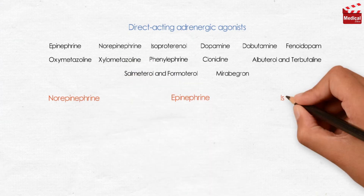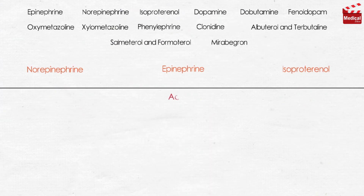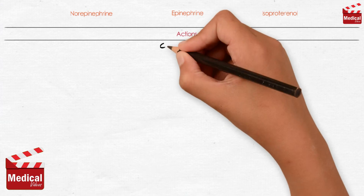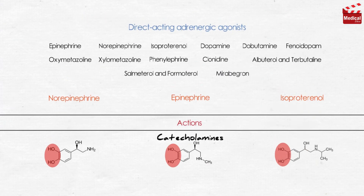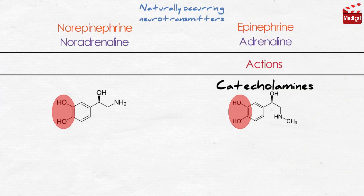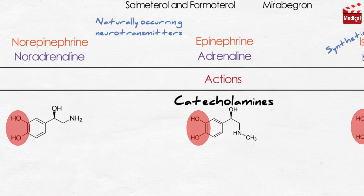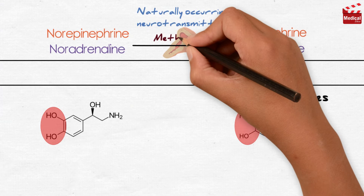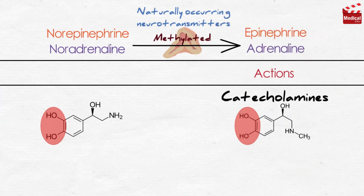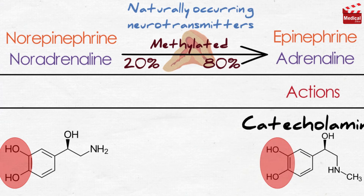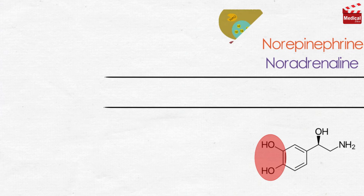Let's talk about epinephrine, norepinephrine, and isoproterenol at the same time and make a simplified comparison of their actions, therapeutic uses, pharmacokinetics, and adverse effects. All three are catecholamines. Epinephrine and norepinephrine, also known as adrenaline and noradrenaline respectively, are naturally occurring neurotransmitters, while isoproterenol, also known as isoprenaline, is synthetic. In the adrenal medulla, norepinephrine is methylated to produce epinephrine, which is stored in chromaffin cells along with norepinephrine. On stimulation, the adrenal medulla releases about 80% epinephrine and 20% norepinephrine directly into the blood. Norepinephrine is the neurotransmitter of adrenergic nerves.